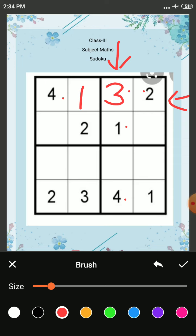Now take this block. 1, 2, 3. Which number is missing? 4. So we will write 4 here.